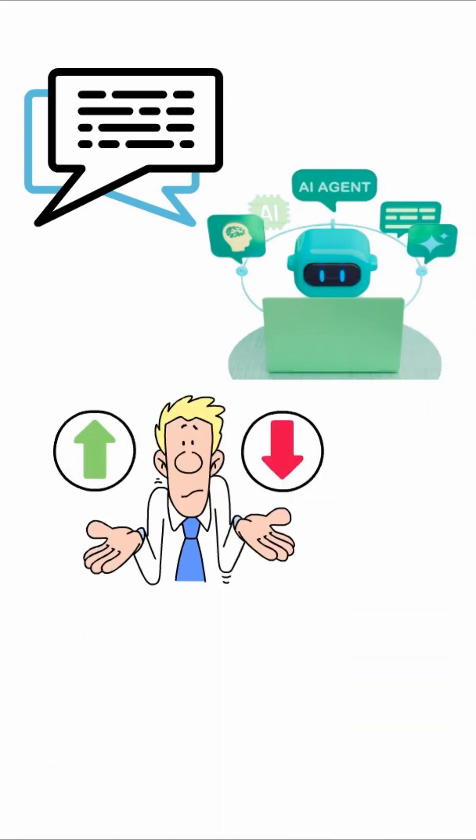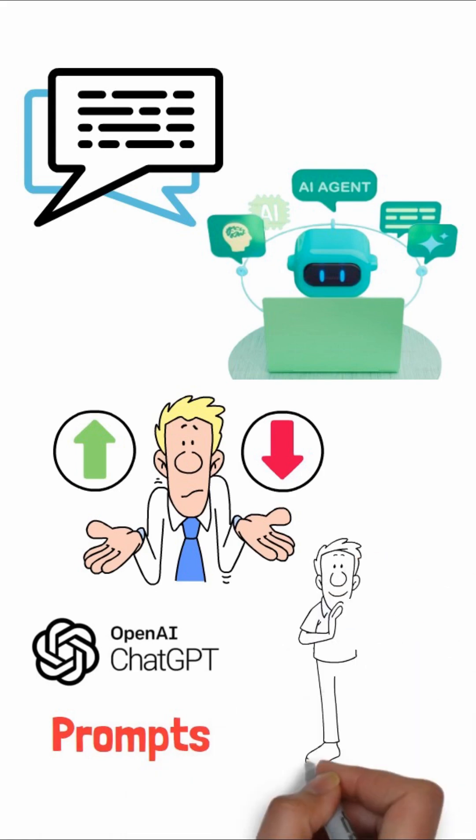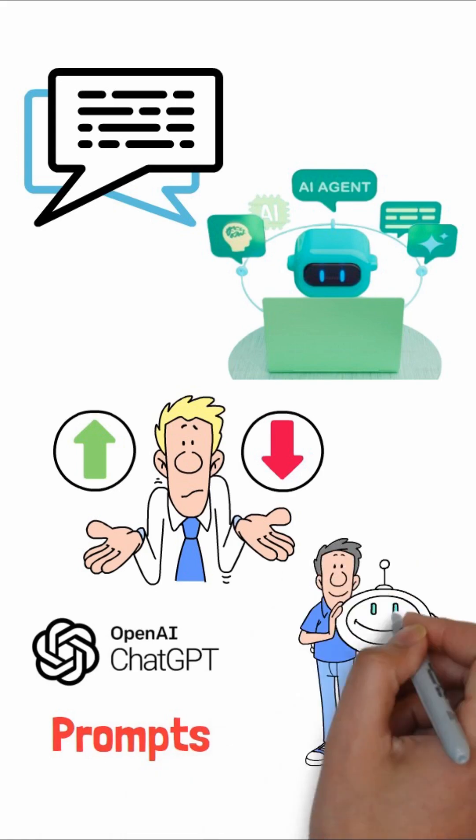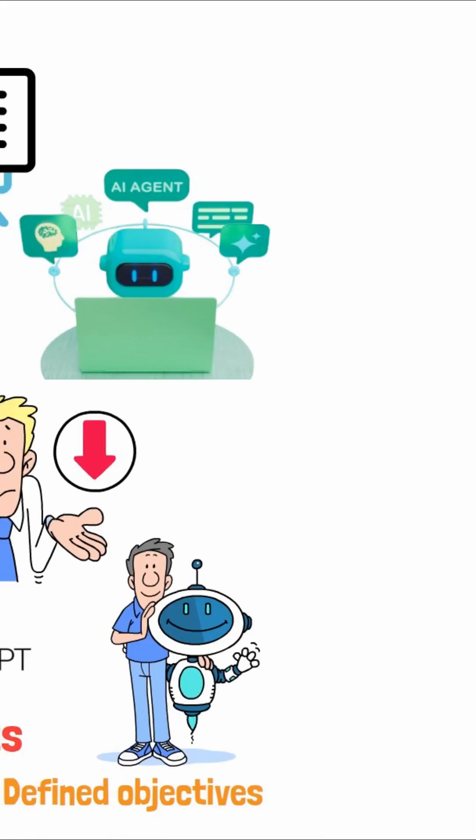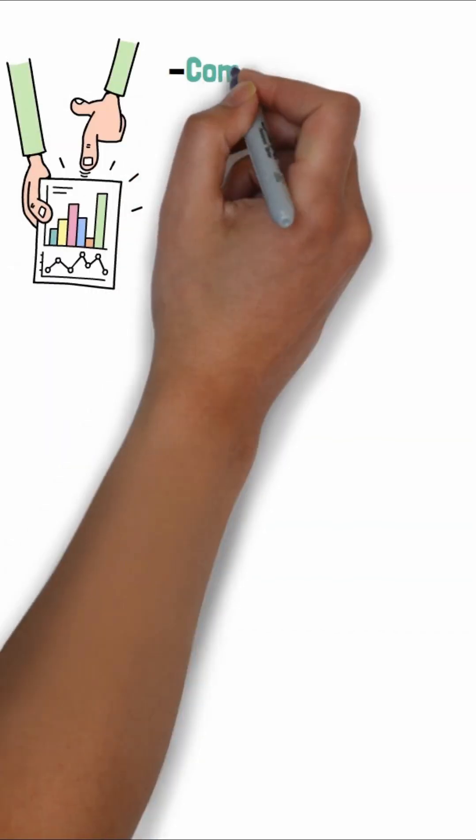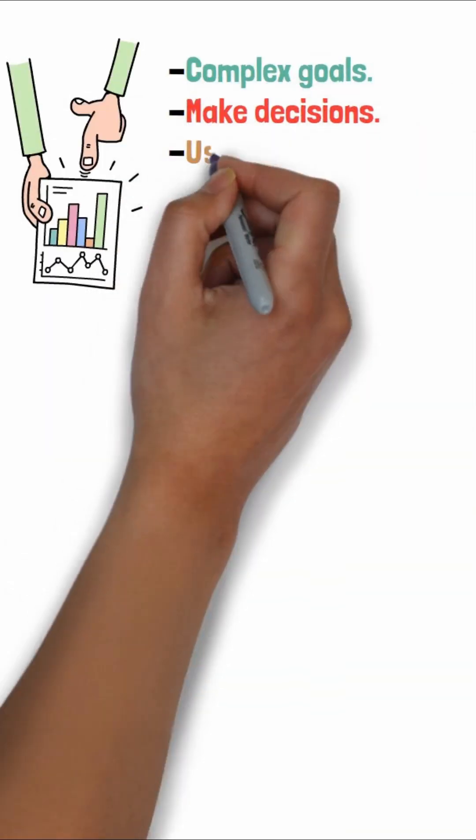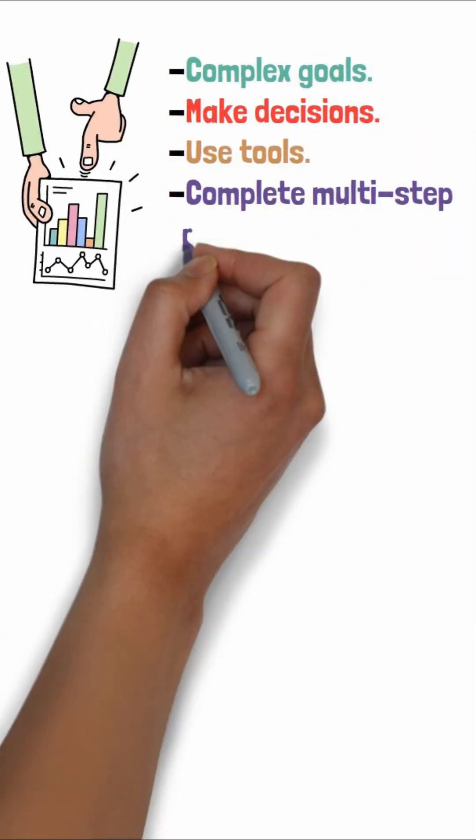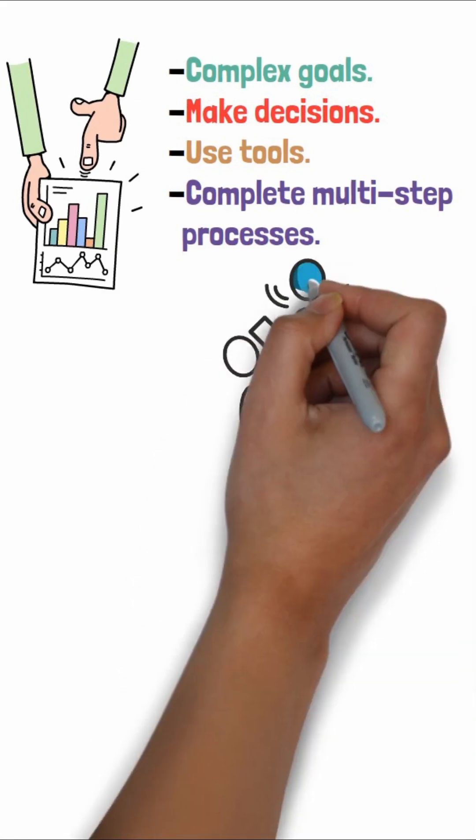Here's the key difference. While tools like ChatGPT respond to your prompts, Agentic AI systems work autonomously toward defined objectives. They can break down complex goals, make decisions, use tools, and complete multi-step processes, all without constant human direction.